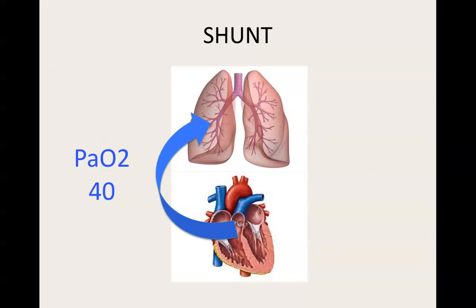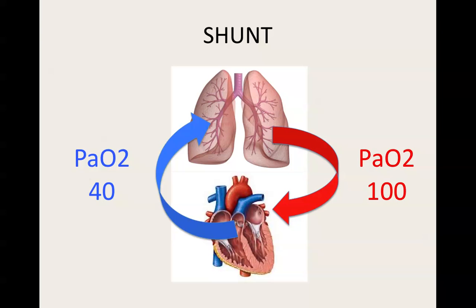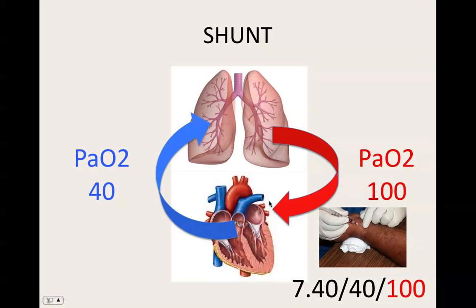The blood is oxygenated by the lungs, as we've learned, and it flows to the left side of the heart via the pulmonary veins, where it is then sent out throughout the rest of the body — here into the left heart and then pumped out through the aorta. That's why when I sample the arterial blood with an ABG in the radial artery, the partial pressure of oxygen is 100.